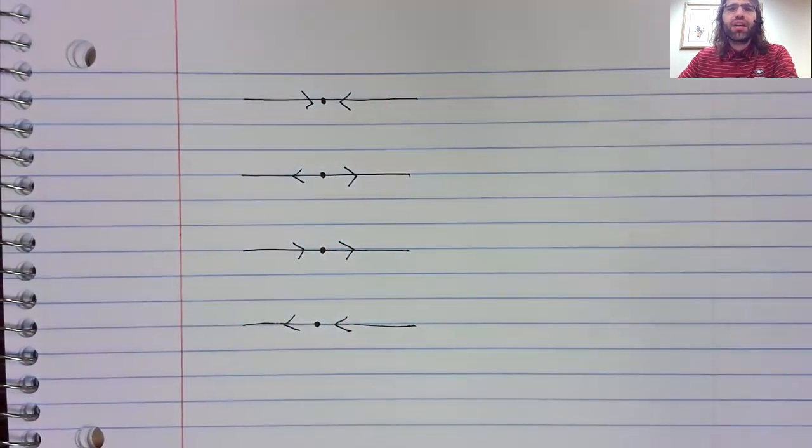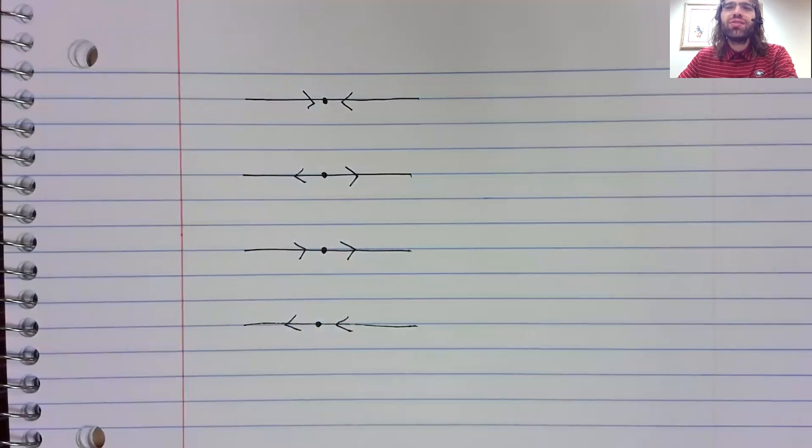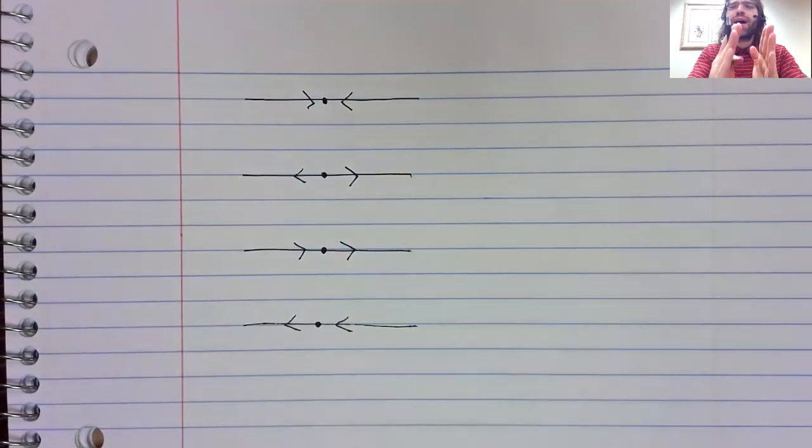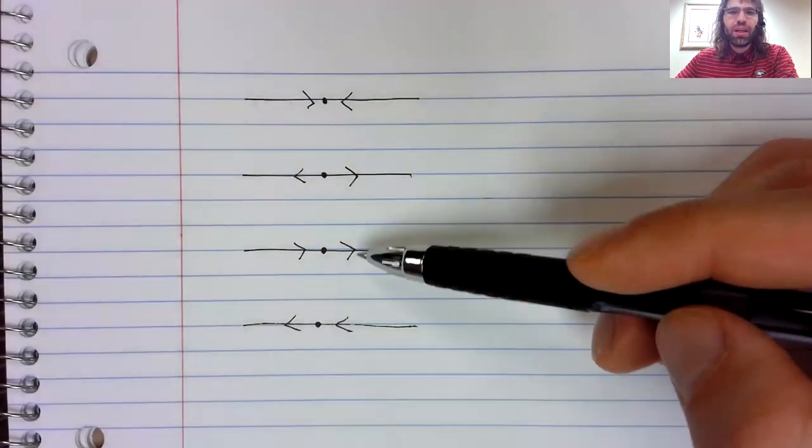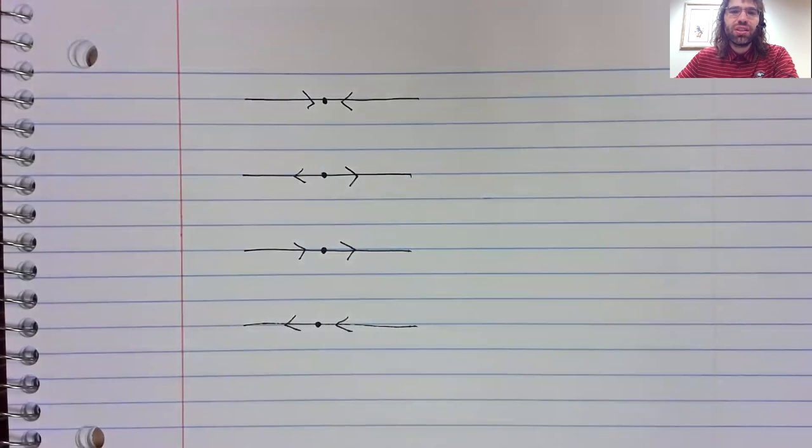And then there are some other fringe cases where you could have a whole line segment that consists entirely of fixed points. But these are the major things that you can see.